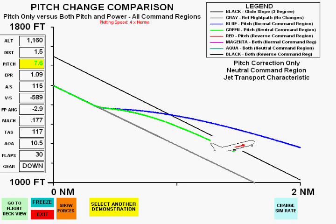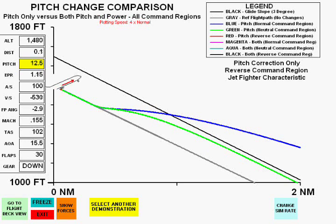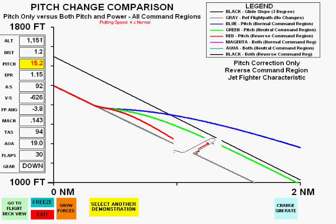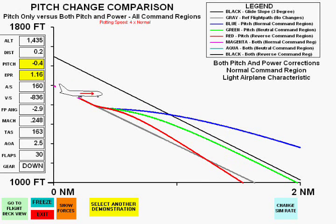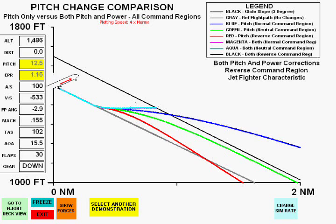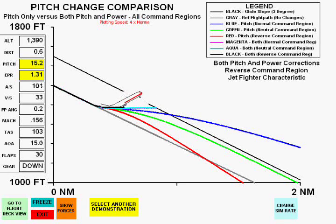Next will be pitch-only in the neutral command region. Notice the final flight path is approximately parallel to the glide slope. Next will be a pitch-only correction in the region of reverse command. Notice the final flight path in this case diverges from the direction of the glide slope. These next three plots are all coordinated pitch and power, and they all have approximately the same timely correction.